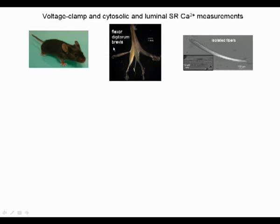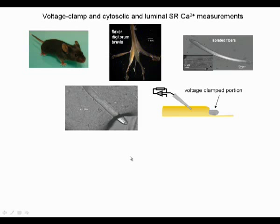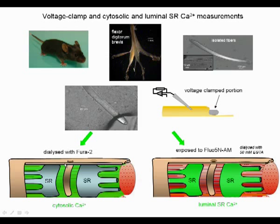Experiments were performed on flexor digitorum brevis muscle fibers isolated by enzymatic treatment. Fibers are voltage clamped using the silicon clamp technique, which consists in partially covering the fiber with silicon grease and then impaling the cells through the grease with a microelectrode. FURA-2 was dialyzed through the electrode for recording cytosolic calcium signals. All cells were also exposed to mag-fluo-4 (305NEM), which diffuses within the SR lumen to report SR calcium changes.